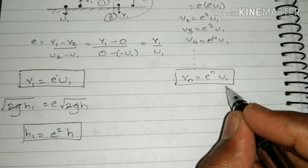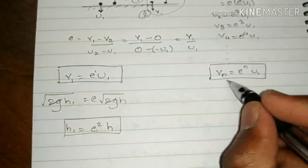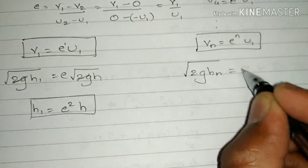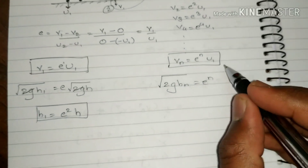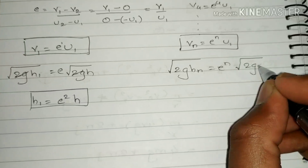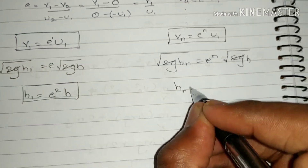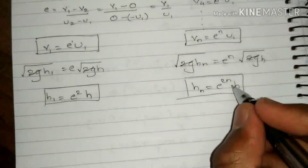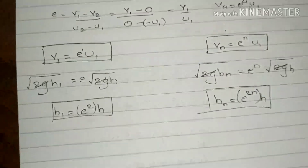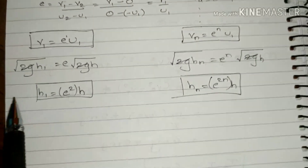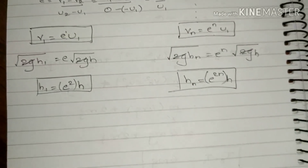Since we know the velocity after the nth bounce, applying the same logic: vn = √(2ghn) = eⁿ × u1 = eⁿ × √(2gh). Squaring both sides and cancelling 2g inside the square root gives hn = e^(2n) × h. These expressions give you the velocity after any number of bounces and the height after n bounces.